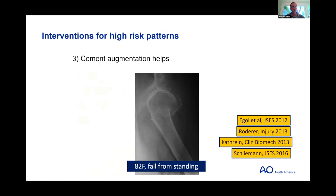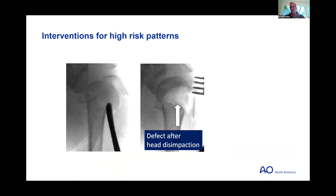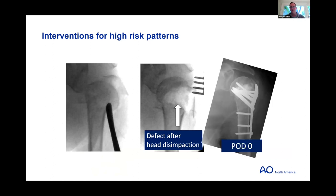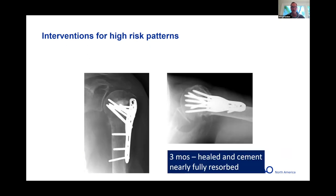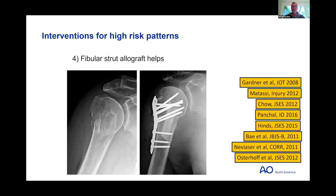Cement augmentation can help. I use it most often in a geriatric valgus pattern where we elevate the head and now have a big cancellous defect in the metaphysis — a good situation to fill this void and provide a stable platform for the head fragment. Here's this patient at three months: head well-reduced and healed, cement nearly fully resorbed. New fenestrated implants to deliver cement into the head are on the horizon.